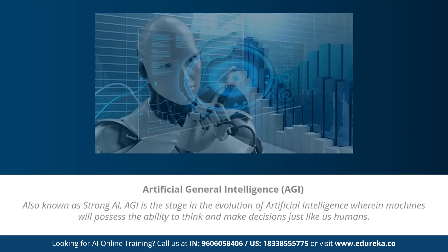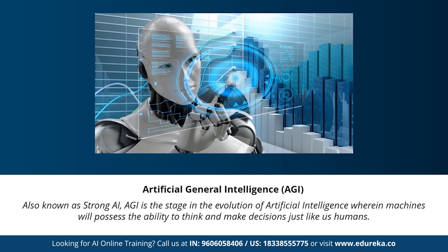Next we have artificial general intelligence, also known as strong AI. This stage is the evolution of artificial intelligence wherein machines will possess the ability to think and make decisions just like human beings. There are currently no existing examples of strong AI, but it's believed that we will soon be able to create machines as smart as humans. Strong AI is considered a threat to human existence by many scientists, including Stephen Hawking, who warned that the development of full artificial intelligence could spell the end of the human race.